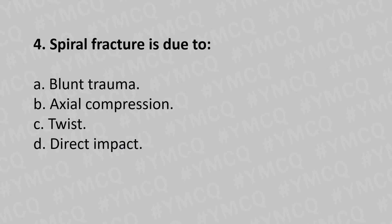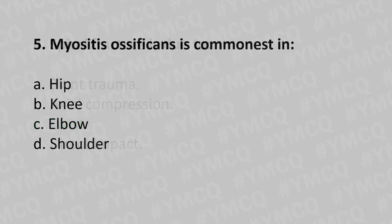Moving to our fourth question: spiral fracture is due to — option A blunt trauma, option B axial compression, option C twist, option D direct impact. And the answer is option C twist.